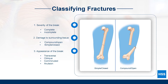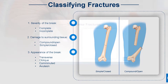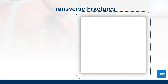Finally, we can classify bones based on the appearance of the break. The four most common types of fractures are transverse, oblique, comminuted, and avulsion fractures. We will examine these types of fractures in greater detail throughout this course.